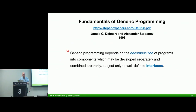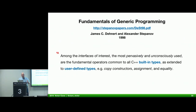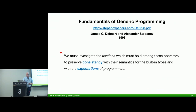It all leads up to the Fundamentals of Generic Programming paper from 1998. Generic programming depends on the composition of programs into components that may be developed separately but combined arbitrarily, subject to well-defined interfaces. Among the interfaces of interest, the most pervasively and unconsciously used are the fundamental operations common to all C++ types, including built-in types — and the way we extend these semantics to our user-defined types: assignment, equality, copy construction, and so on. We must investigate the relations which must hold among these operations to preserve consistency with their semantics and with the expectations of programmers using our libraries.